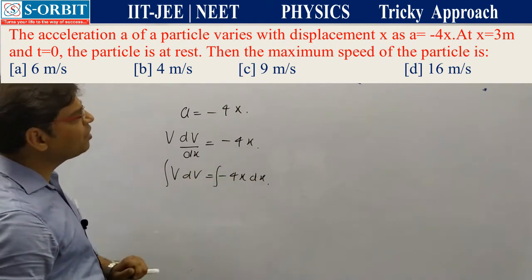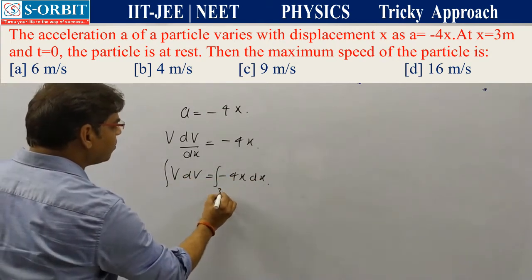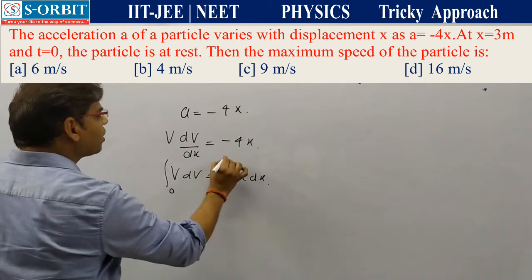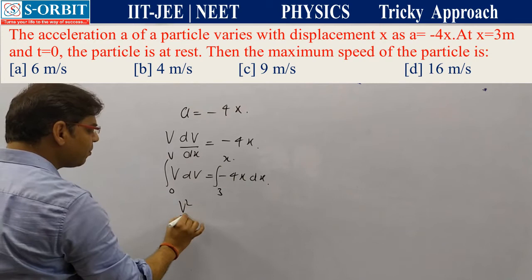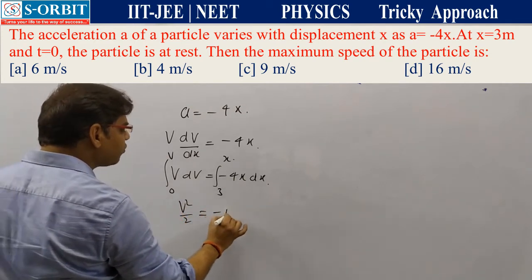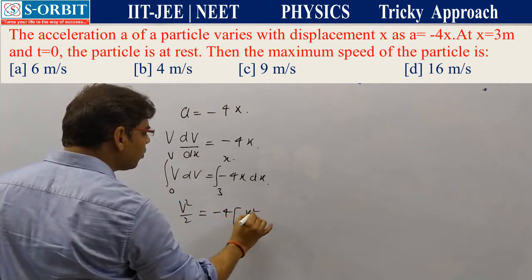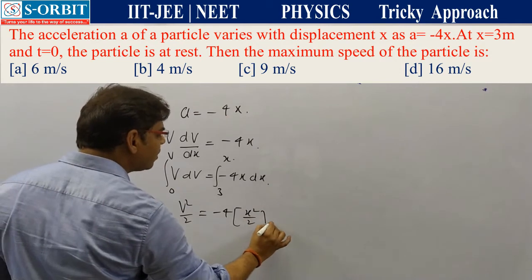It is given that at x = 3 meters, the particle is at rest, meaning v = 0. Integrating: v²/2 = -4 × (x²/2), with limits from 3 to x.